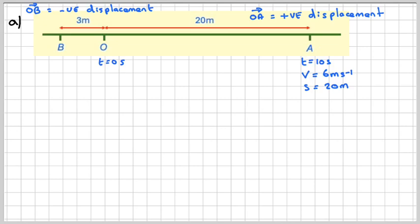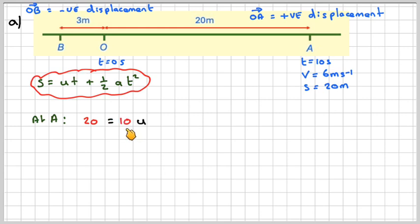So what we've got to find is the initial velocity and the acceleration. We know it's a constant acceleration. So using S equals UT plus half AT squared, and remember you can only use SUVAT equations if the acceleration is constant. At A, S is 20 metres, and U we don't know, but we know that the time is 10.